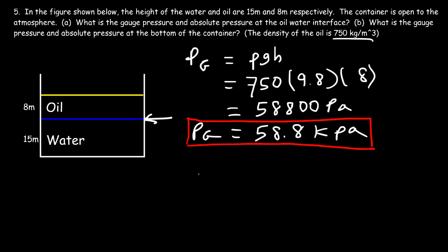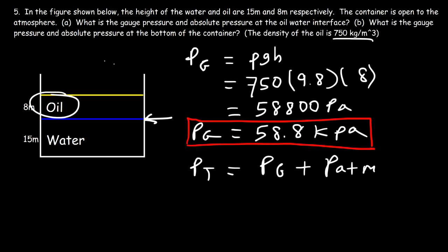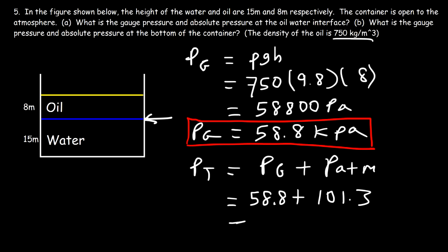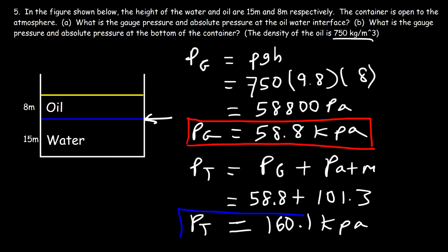The total pressure at the oil-water interface is the gauge pressure plus the atmospheric pressure — accounting for the weight of the oil above the interface and the weight of the air molecules above the oil. So it's 58.8 plus 101.3, giving an absolute pressure of 160.1 kilopascals.